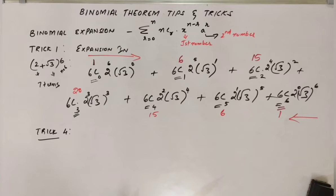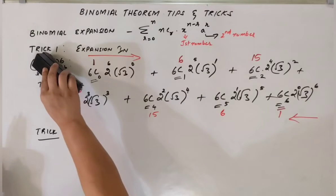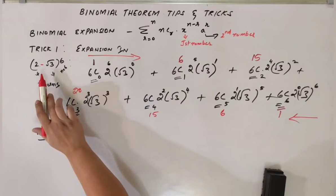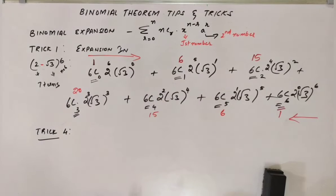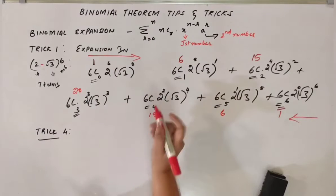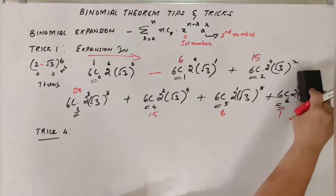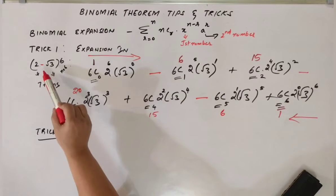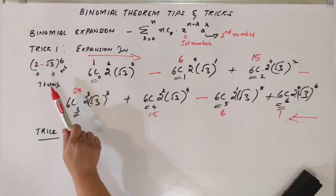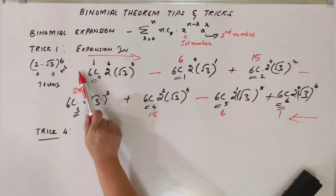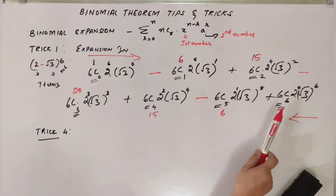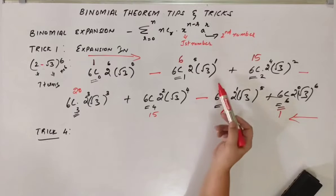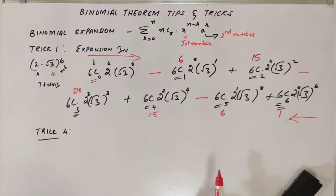Trick number 4: what if instead of a plus sign, it was a minus sign? Whenever there is a minus for the second term, we alternate the signs. So we start with plus, minus, plus, minus, plus, minus, plus. Whenever there is a negative second term — in this case minus root 3 — we alternate the signs. This way we don't have to figure out odd or even powers separately to determine the sign of each term.